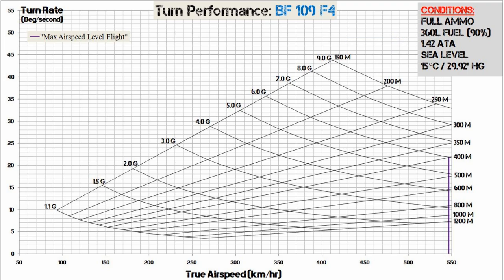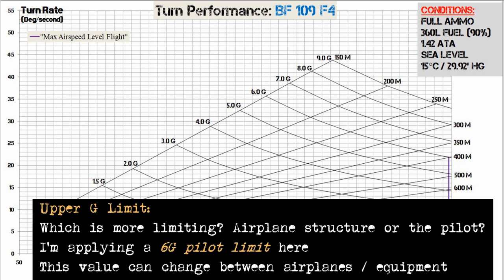The next thing we look at is the upper G limit, which can be a structural limit or a limit on the pilot, depending on which is more limiting. In this case the pilot is going to be limited by the G-force he can apply to himself, because the structural limit is higher. I've made the assumption that the 109 pilot can't pull more than 6 Gs, because he doesn't have a G suit.